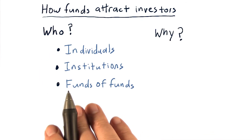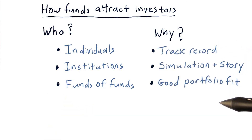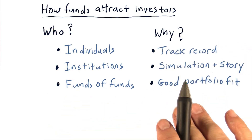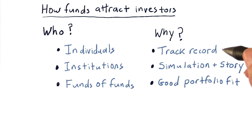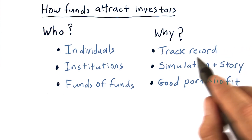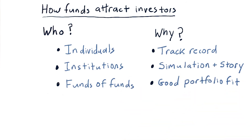So, besides knowing who your investors might be, it's critically important to know why they might invest in your fund — how can you present the case to them that will convince them that they should let you manage their money? Here are at least some of the criteria that folks like this would consider before investing in a hedge fund. The first is track record. If your fund has a great track record, that's some of the best evidence that it's going to continue to work well. Many institutional investors will want to see a good track record for at least five years before they'll invest in a particular fund.